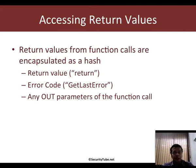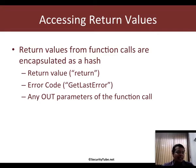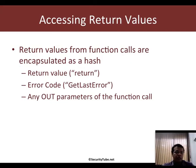Accessing return values: return values are of utmost importance when you want to run a series of successive APIs and string them together in a meaningful program. Return values in Railgun come back as a hash data structure in which the return value is keyed using 'return', the error code is keyed using 'get_last_error', and any out parameters are returned with the appropriate names defined in the Railgun definition files.